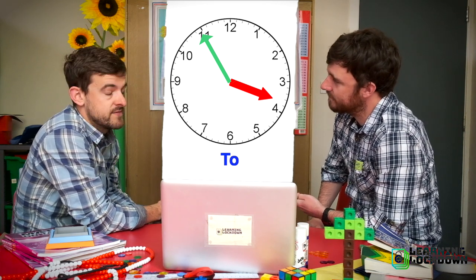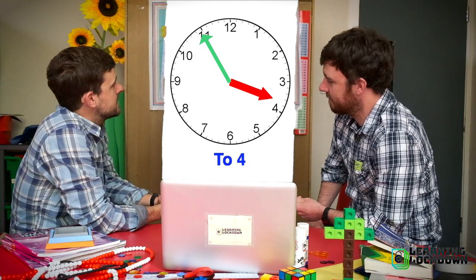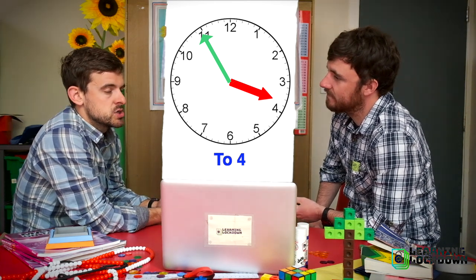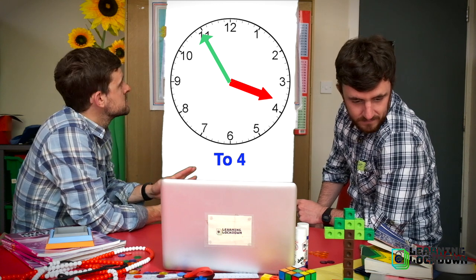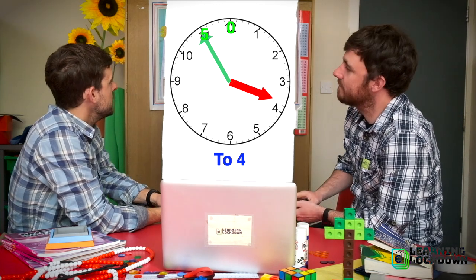Now, as Mr. S said, because we're going to, we count backwards still in fives. So zero, five. It's five minutes to four. It's five minutes until I get to four. Nice and easy.